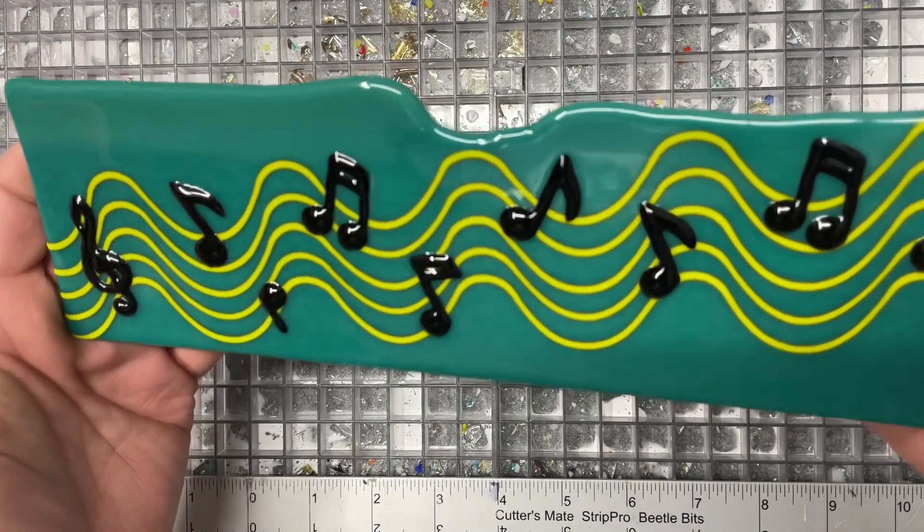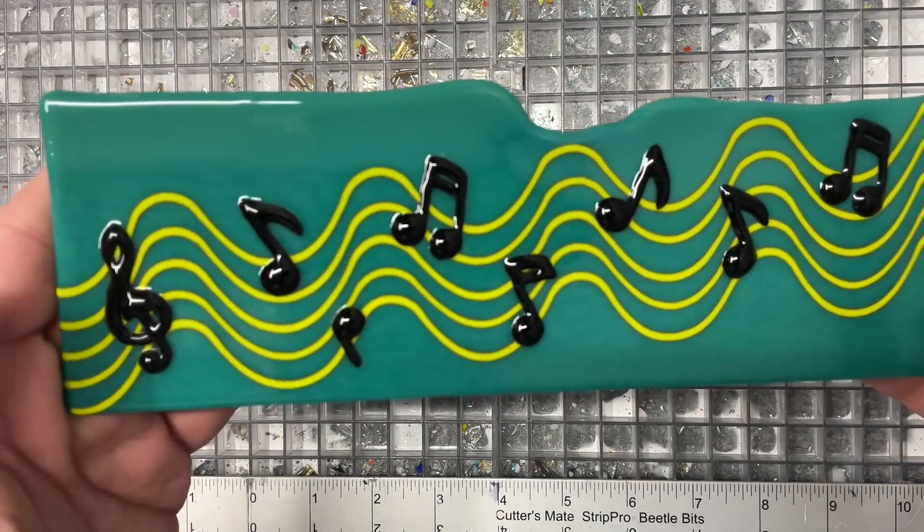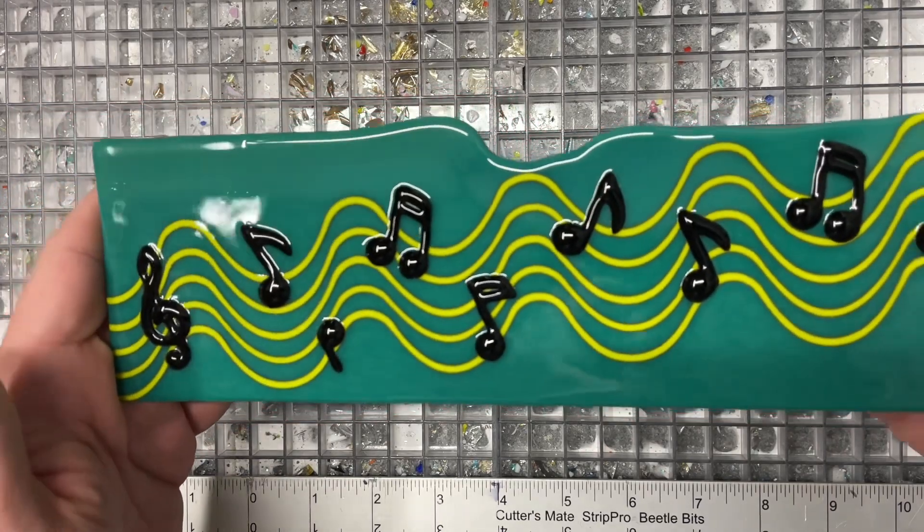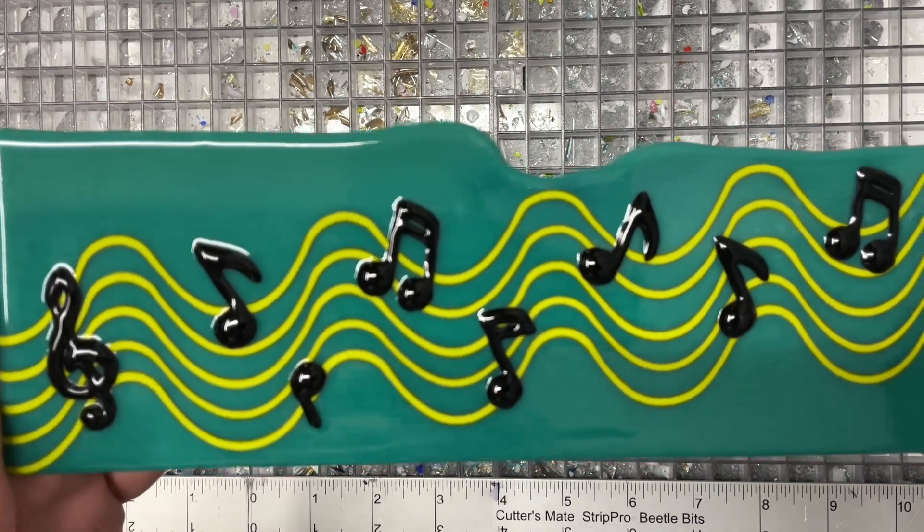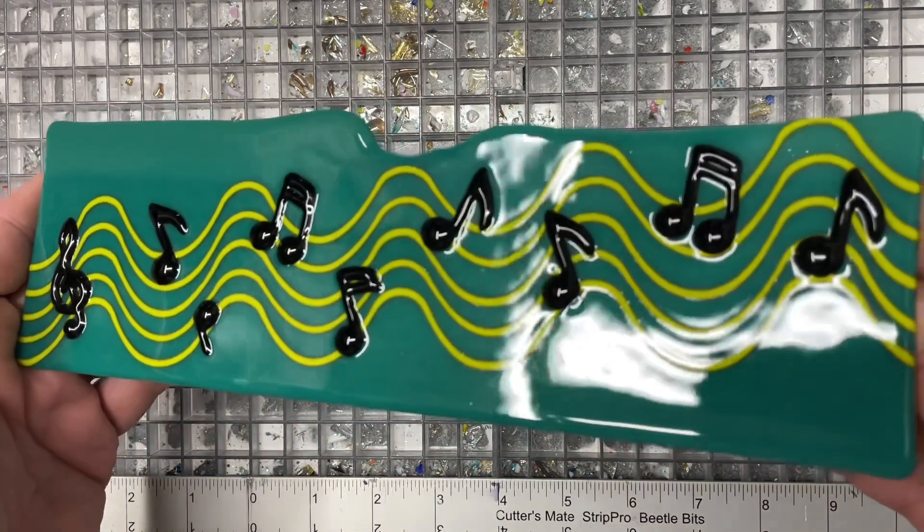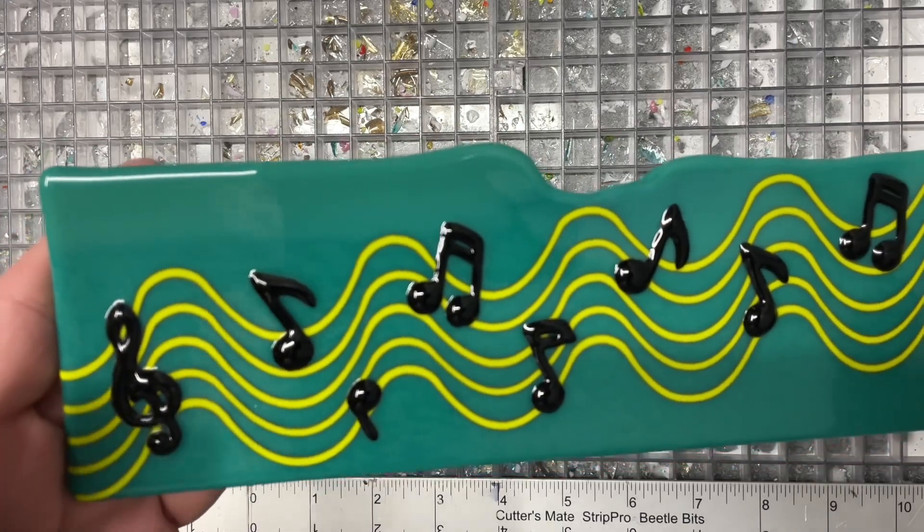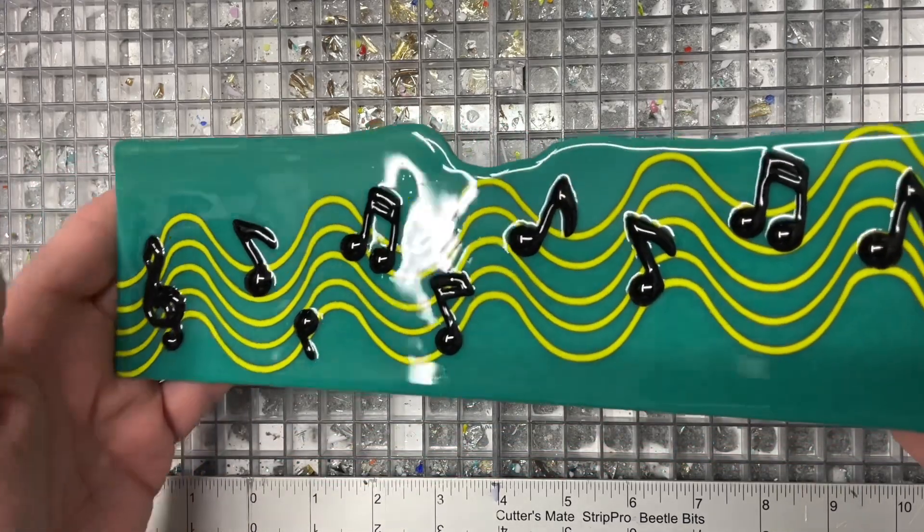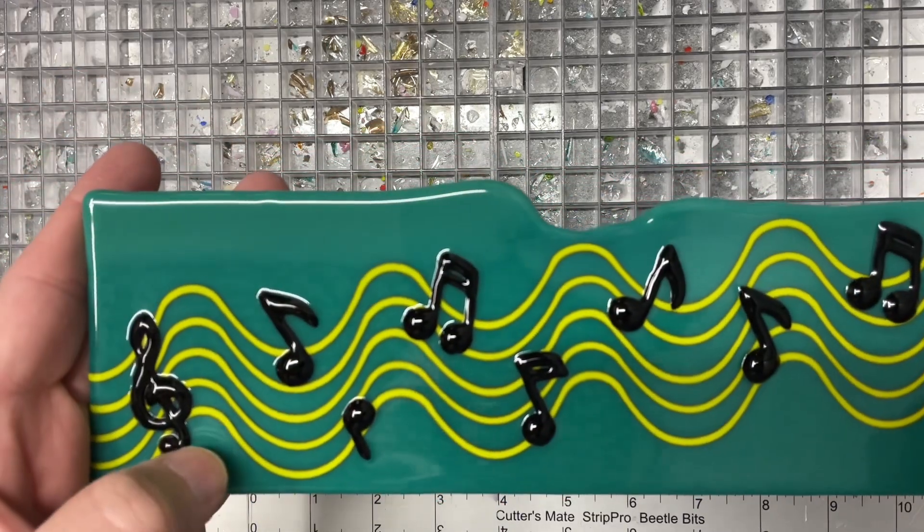This came out of the kiln beautifully. My only thing is that I went to 1400, and I often go to 1375, but I had some other things in there that I wanted to go a little bit hotter. I wish I had just stuck with my instinct and fired it on a different schedule because the water jets got a little bit softer than I would have wanted. I still think it's great. I'm pleased with it overall, but next time trust your instincts. Go with the schedules you know.